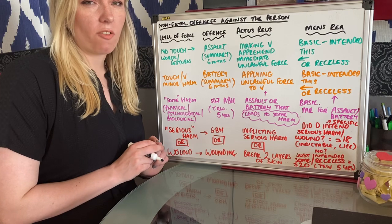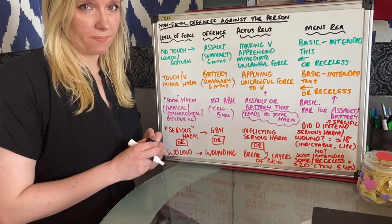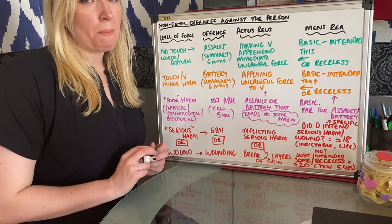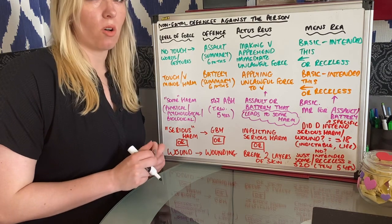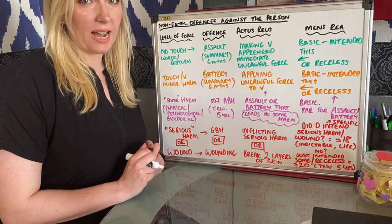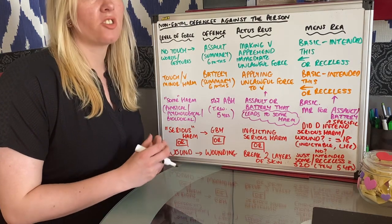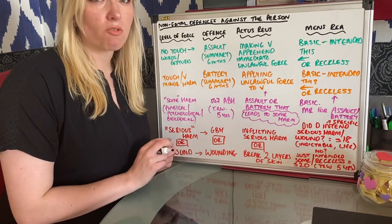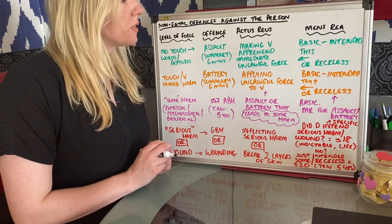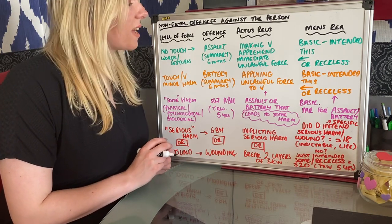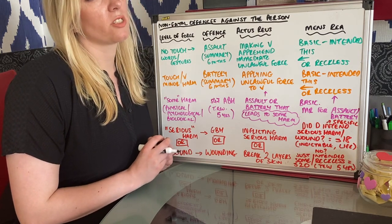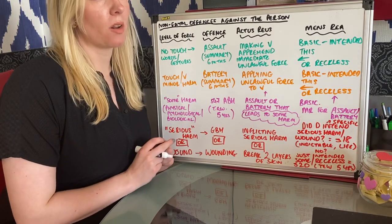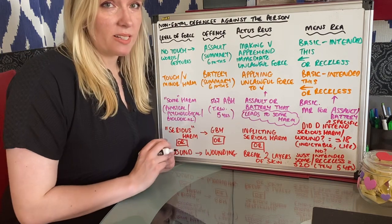Have a look first off at the incidents that have happened to the victim. What has actually happened to the victim first? Maybe the victim hasn't been touched at all - that's really important. There's been no physical contact, but perhaps words or gestures have been used towards the victim. If that's the case, then the offense you need to describe and explain and apply is assault. So assault is a summary offense, so it's not a very serious offense with a maximum sentence of six months according to the Criminal Justice Act 1967. Remember though, the offense itself is defined in common law.